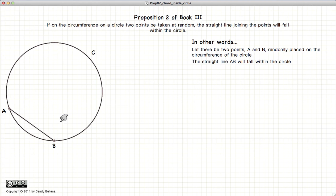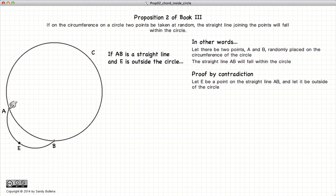We are going to prove this by the method of contradiction. So let's assume that we have a line AB which is straight, so it requires a lot of pretending here. But let's assume that AB is straight and it lies outside the circle.